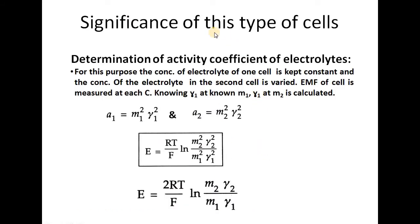The significance of this type of cell is that we can easily determine the activity coefficient of electrolytes. By substituting activities with the product of molalities and activity coefficients, we get E = RT/F · ln(M2²γ2²/M1²γ1²). The concentration of one cell is kept constant while the concentration of the second cell is varied, and EMF is measured at each concentration. Knowing γ1 at a particular M1, we can easily find γ2 at a particular M2.